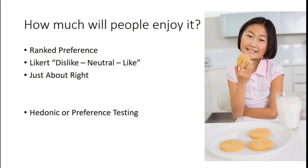There's a wide variety of different methods, but three constantly emerge when working with students and small businesses. First, rank preference: if I put three samples in front of you, tell me which one is your favorite. Second, Likert: that spectrum from 'I dislike it extremely' through neutral to 'I like it slightly' or 'extremely' — a continuum of opinion that can be specific to attributes or the overall product experience. Third, just about right.